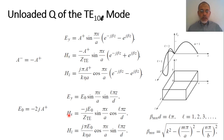Similarly, HX equals −j·E₀ over ZTE multiplied by sin(πx/a) multiplied by cos(Lπz/D), because the two terms are in addition rather than subtraction, and e^(jx) + e^(−jx) = 2cos(x). We replace β by Lπ/D, and the amplitude becomes 2A⁺/ZTE after the sign simplification of −j·(−j) = −1.